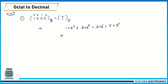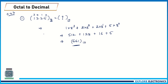Now calculating: 1 into 8 power 3 is 1 into 512, which is 512. Plus 2 into 8 power 2 is 2 into 64, which is 128. Plus 2 into 8 power 1 is 16. Plus 5 into 8 power 0 is 5 into 1, which is 5. Adding all these gives 661 with base 10. This is the decimal equivalent for the octal number 1225.